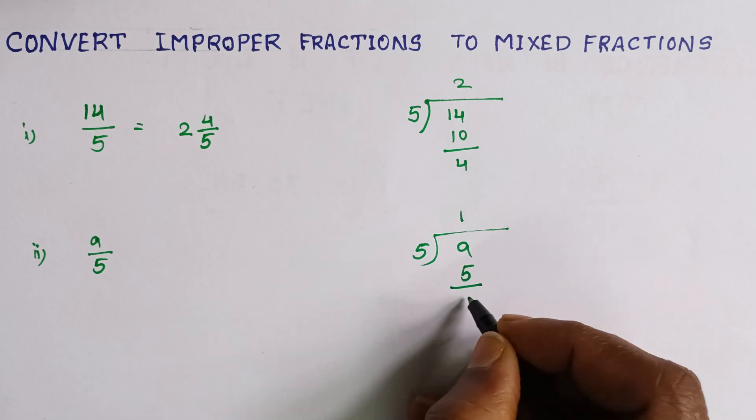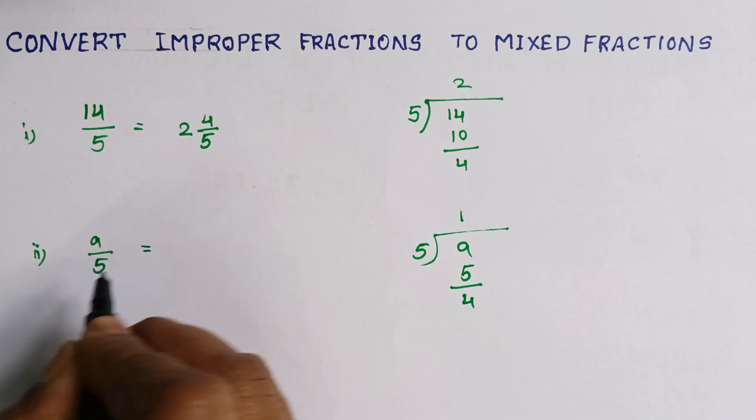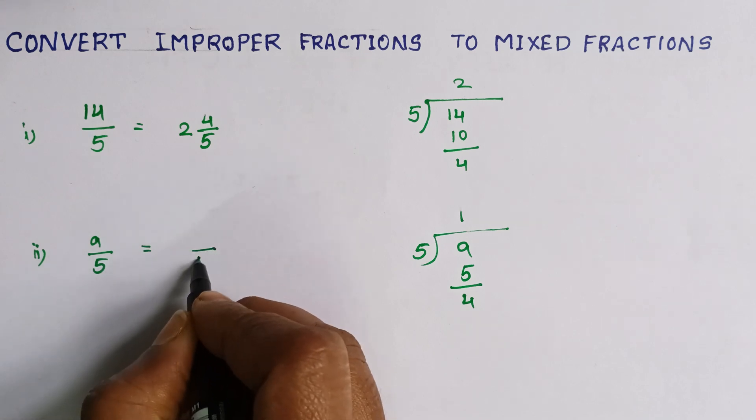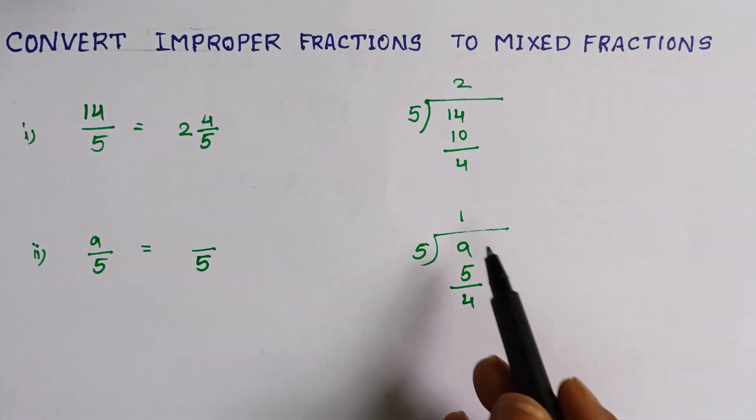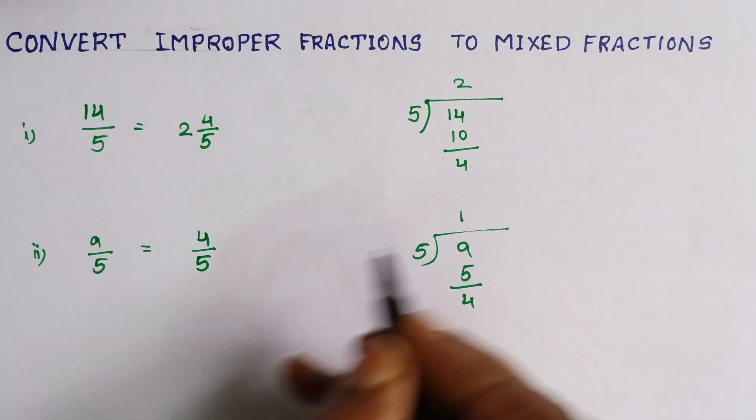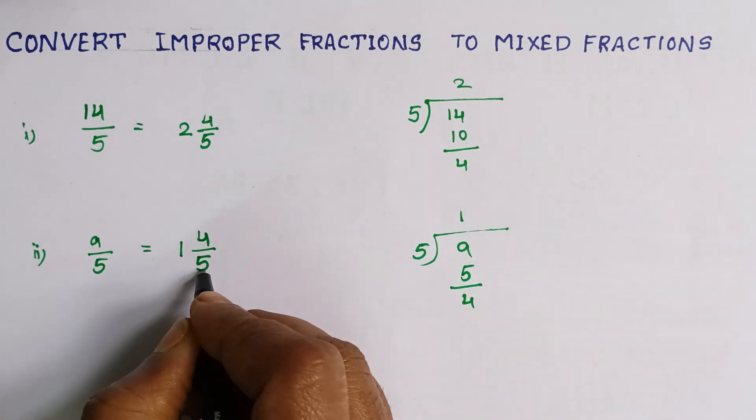The same, we can write the denominator as 5. The remainder is in the numerator place. The remainder is 4, and the quotient is 1. So 5 times 1 is 5, plus 4 is 9.